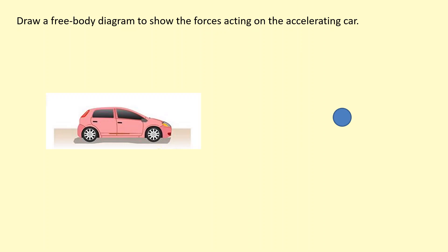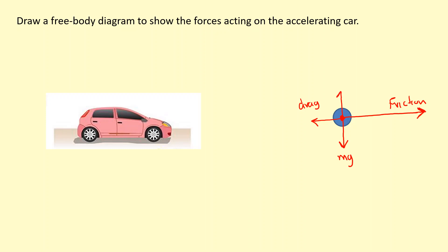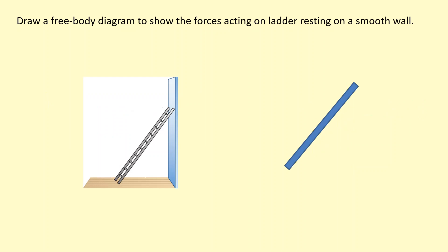Here we have a car accelerating towards the right. The force pushing the car forward — sometimes called thrust — is actually the friction between the tires and the road, pushing it forward. There's going to be some drag force from air resistance acting in the reverse direction. Because the car isn't moving up or down, the weight is balanced by the normal reaction force, so we don't need to worry about those two.